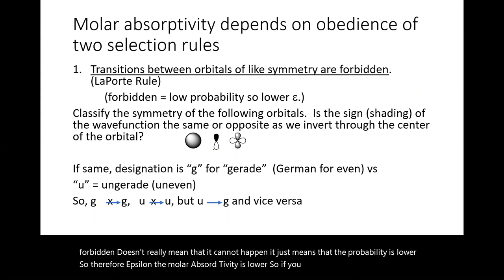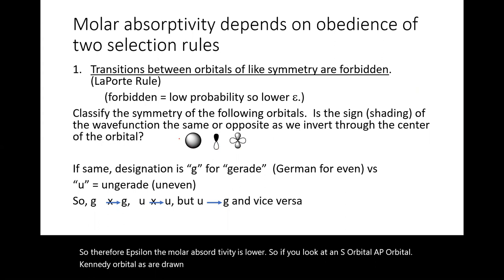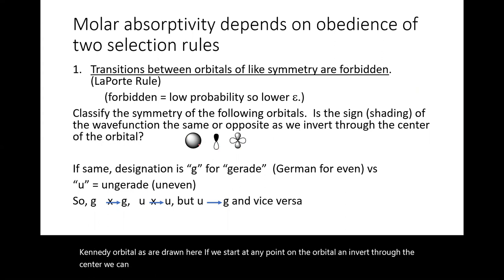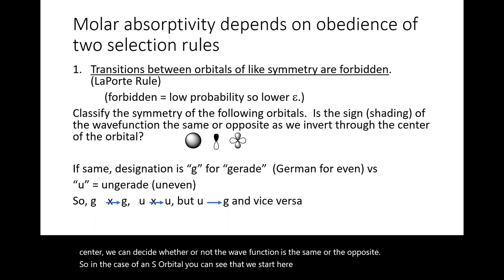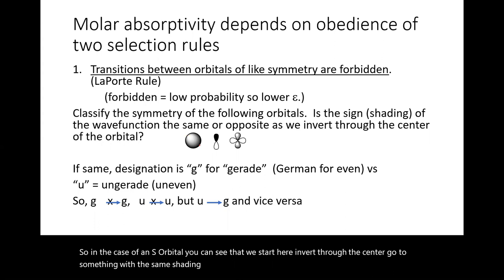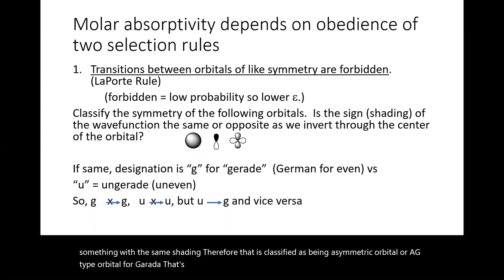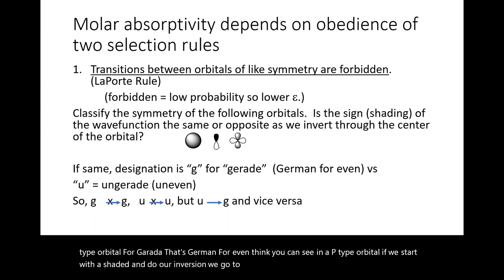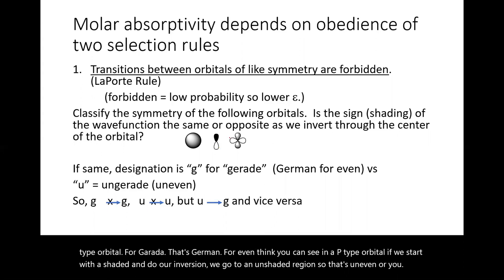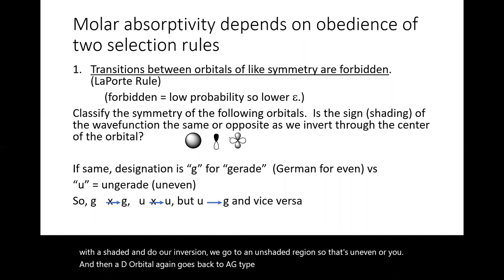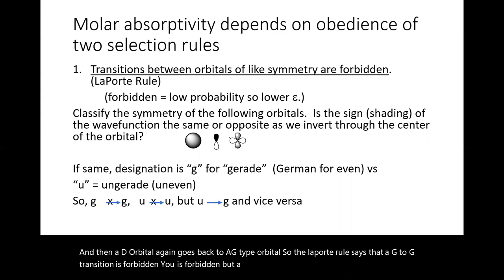Looking at an s orbital, a p orbital, and a d orbital: if we start at any point on the orbital and invert through the center, we can determine whether the wave function is the same or opposite. An s orbital inverts to the same shading, so it is a symmetric or g-type orbital (g for gerade, German for even). A p orbital inverts to the opposite shading, making it u (ungerade, or uneven). A d orbital is again g-type. So the Laporte rule says g-to-g is forbidden, u-to-u is forbidden, but a u-to-g transition or vice versa is allowed.